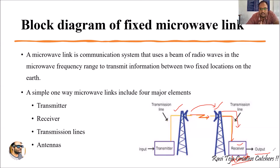In summary, the system uses one transmitter connected via a transmission line to a transmitting antenna, which sends the modulated signal into free space. A receiving antenna picks up the signal and passes it through a transmission line to the receiver, where demodulation is performed and the original data is taken as the output signal.